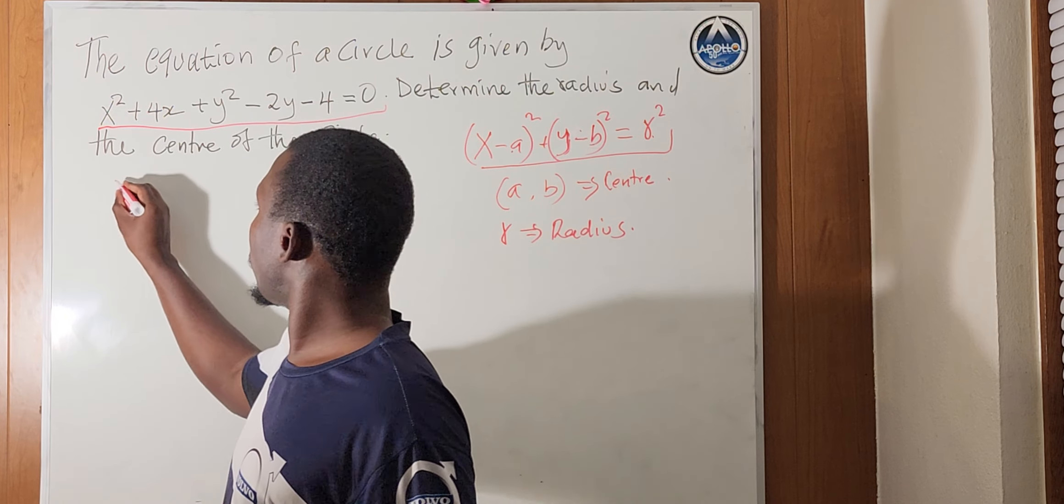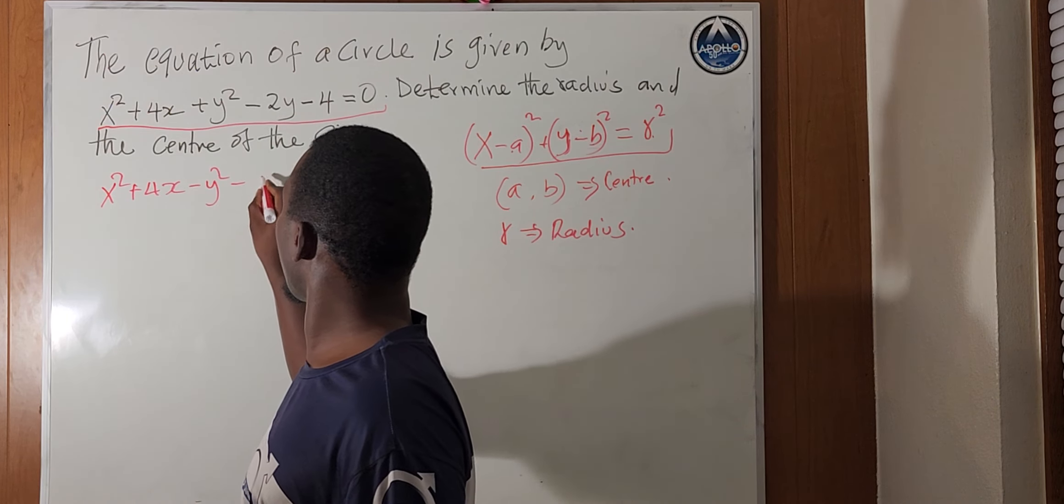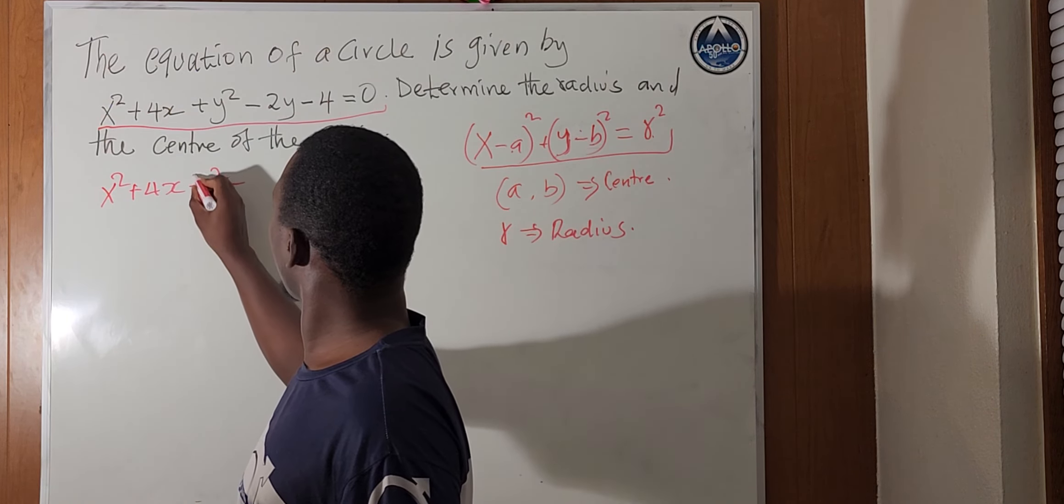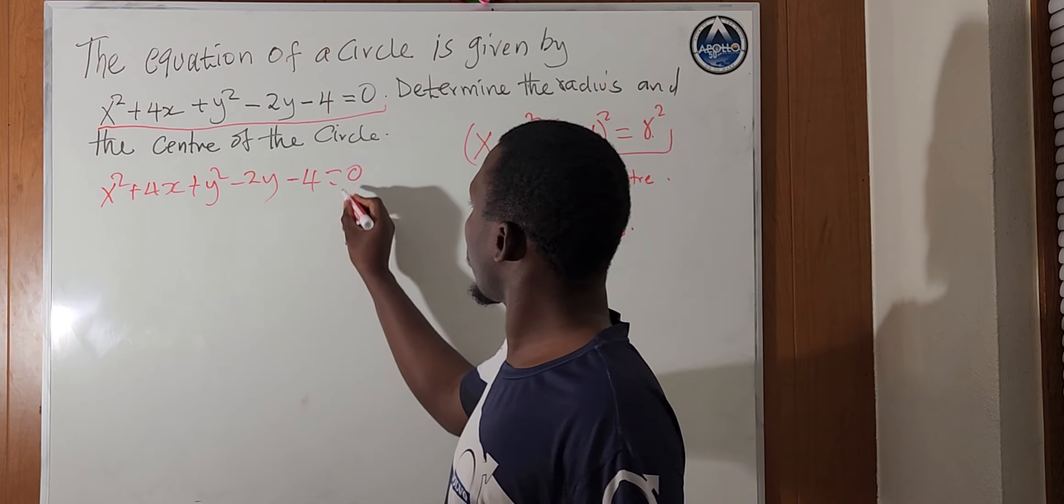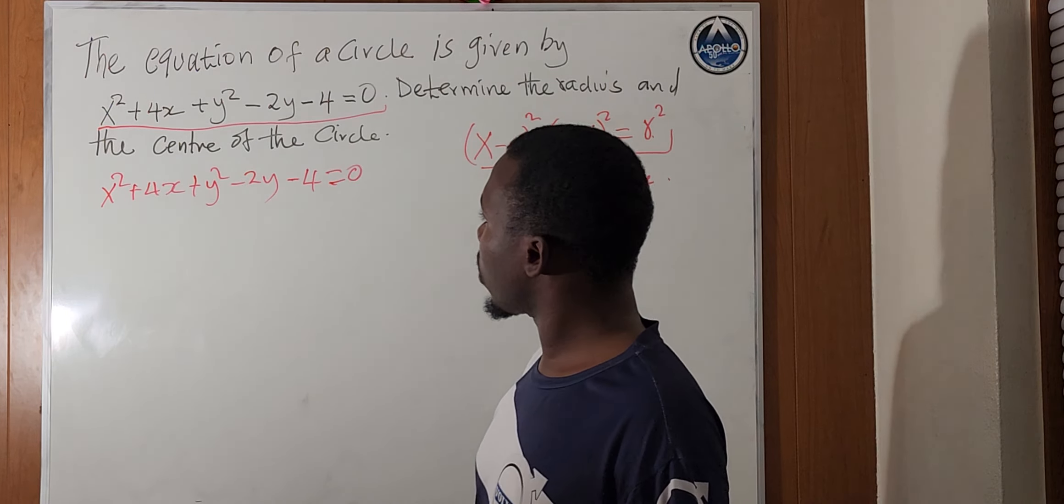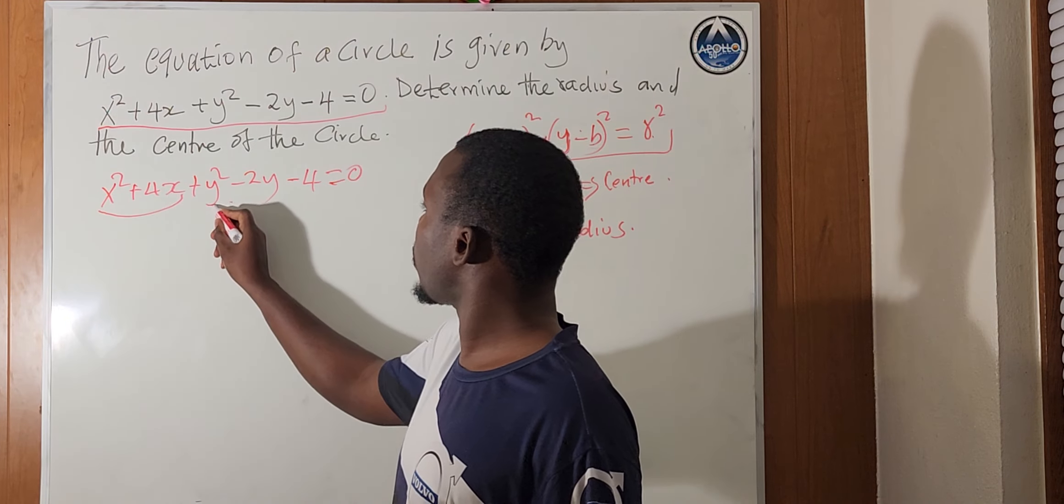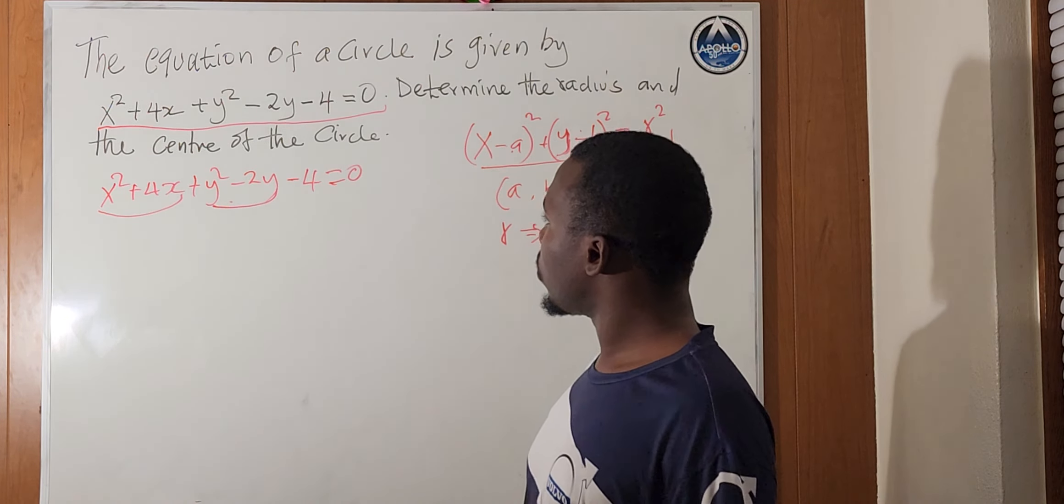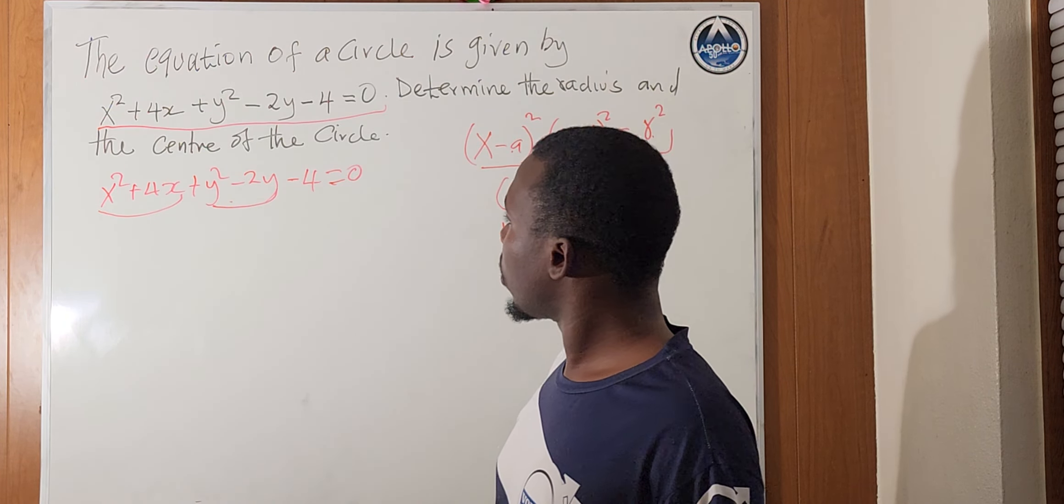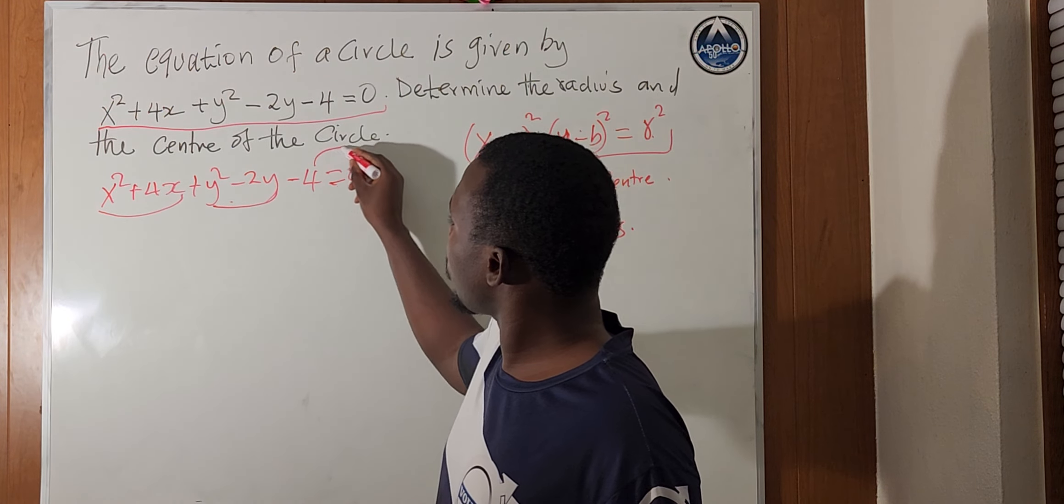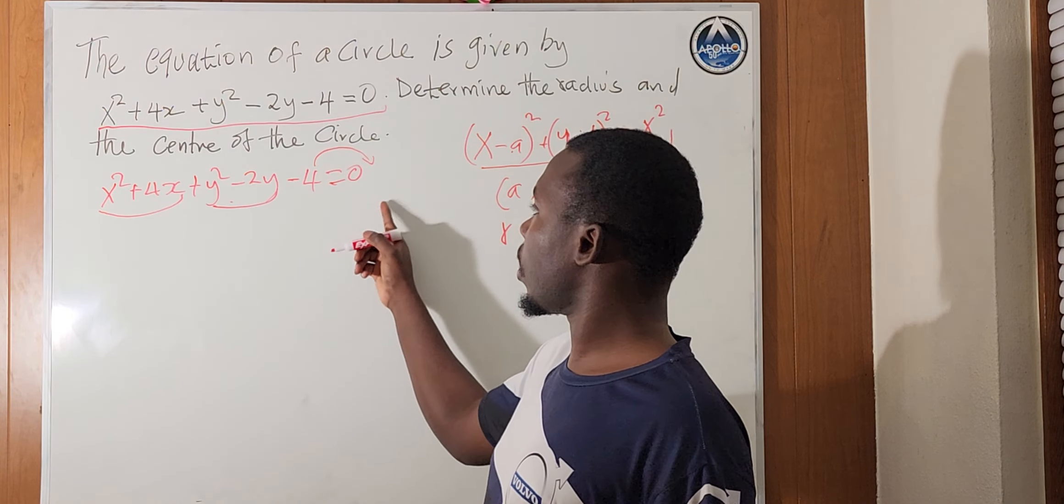We have this equation x squared plus 4x plus y squared minus 2y minus 4 equals 0. So, we'll consider, first of all, if you look at this, the value of x and the part for y here, we'll use what we call completing square method. So, first of all, before we do that, we'll take 4 to the other side and it becomes positive 4 on the other side.